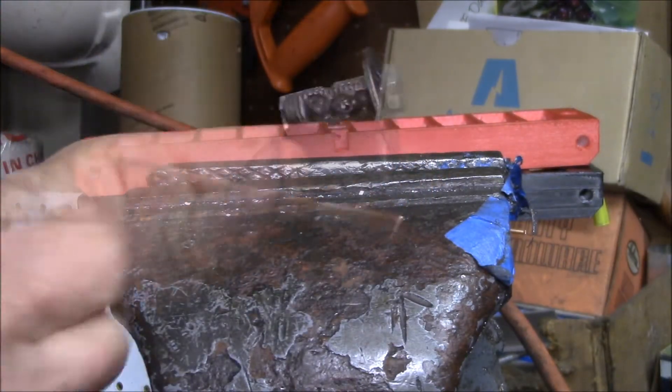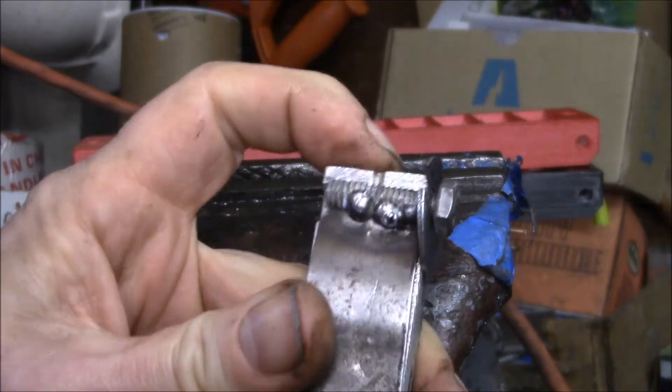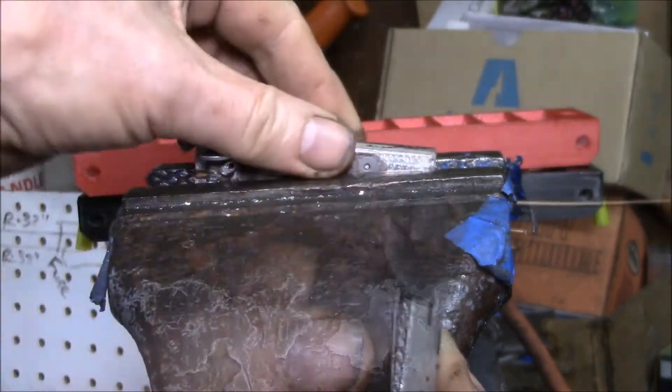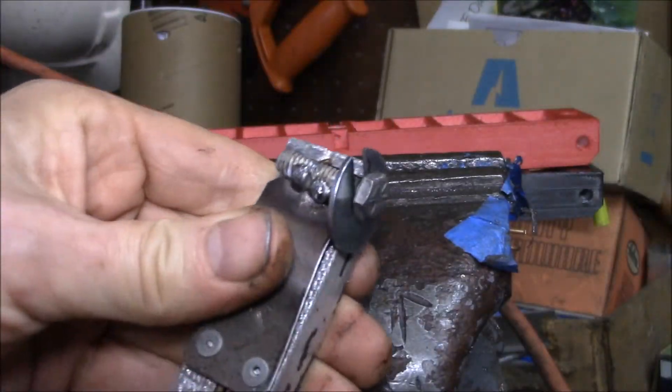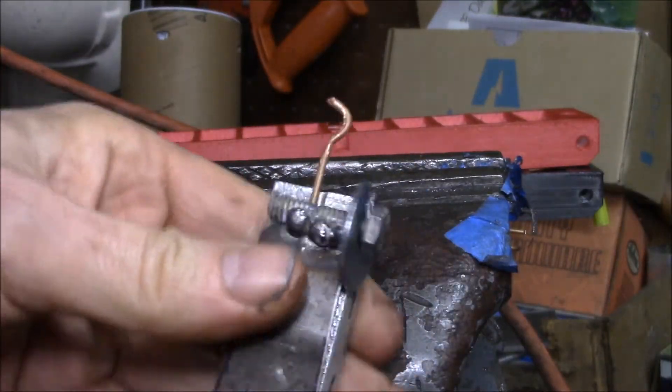Let's bend one more. The forming jig here - shove the wire through and there's my other bent piece. Give it a twist and you can pull it out.